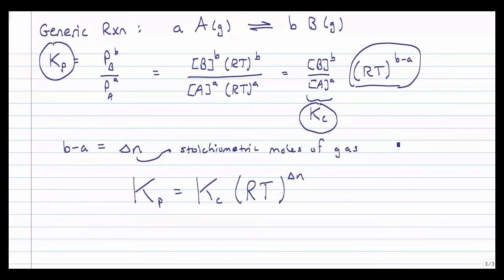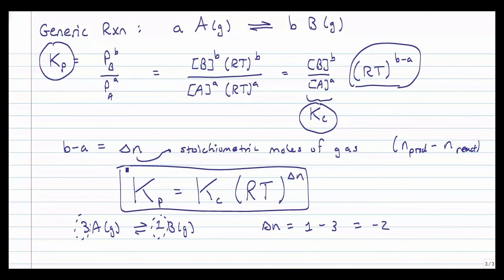And remember, delta n is going to be the number of moles of product in the gaseous form minus the number of moles of reactants. So if our reaction was 3A gas in equilibrium with B gas, then our delta n would be equal to 1 minus 3 equals minus 2. Right here is our 3 that's in there. Right here is the stoichiometric coefficient 1, which we don't write. And we end up with a very simple relationship here that will allow us to compute K sub P from K sub C or vice versa for a gaseous equilibrium system.